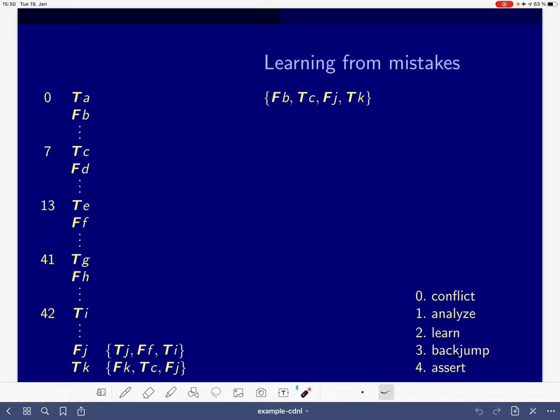This is the very first thing that happens in CDCL. We detect a conflict. Once we have this conflict, we start to analyze it. The first question we ask ourselves, does this guy have a unique implication point? F of B sits here, T of C sits here, F of J sits here, and T of K sits here. This already responds to the question: no, it does not have a unique implication point, because there's only one literal of level 42 contained in the no-good, but we already saw there are two of them.